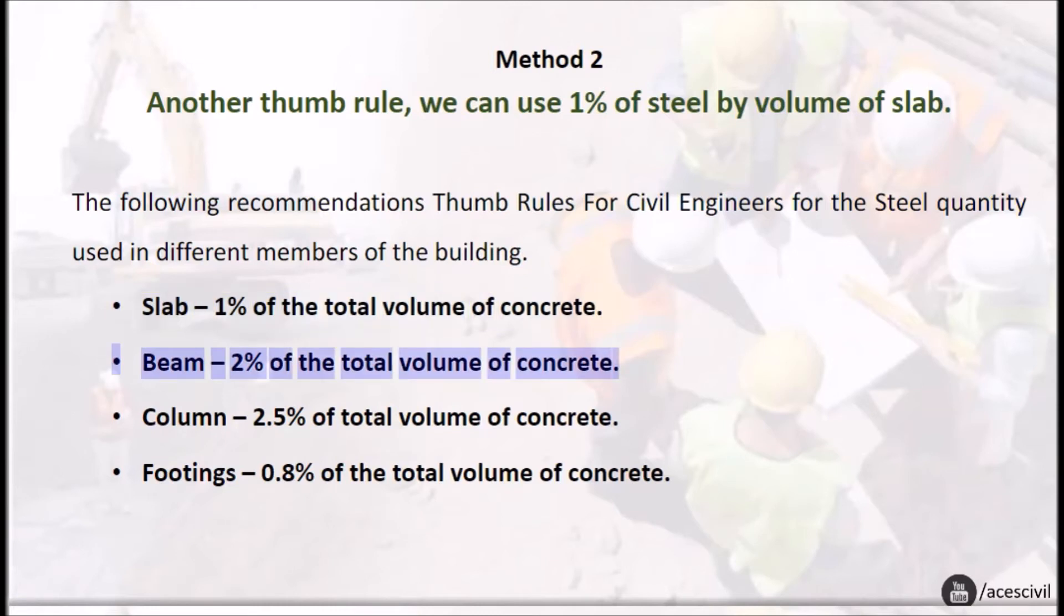Beam: two percent of the total volume of concrete. Column: two point five percent of total volume of concrete. Footings: footings 0.8 percent of the total volume of concrete.